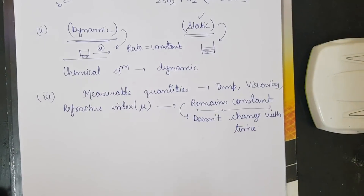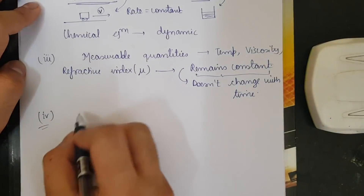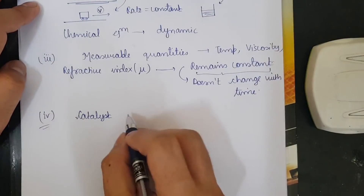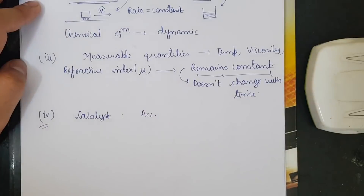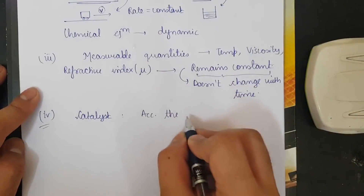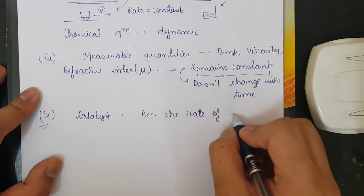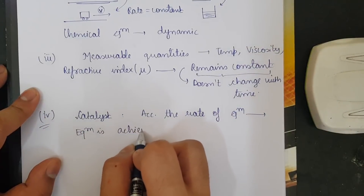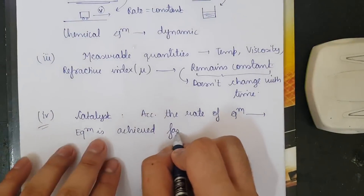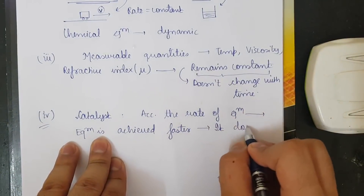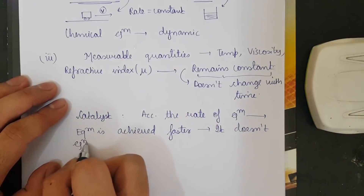The fourth and most important point involves the catalyst. A catalyst is a substance which accelerates the rate of a reaction. Whenever we add a catalyst, it accelerates the rate at which equilibrium is achieved — meaning equilibrium is reached faster. However, it does not affect the equilibrium state itself.